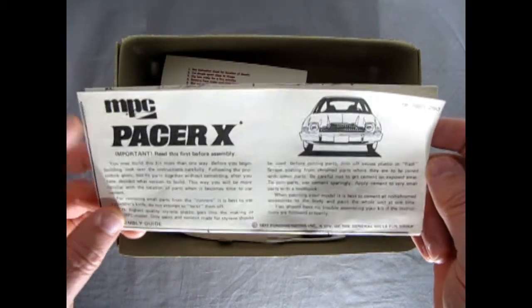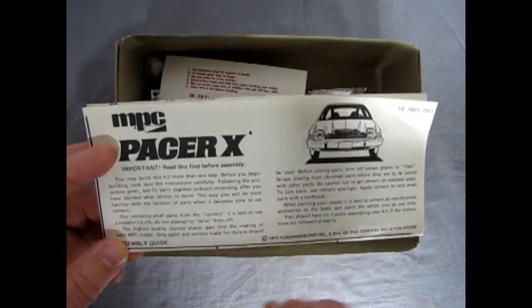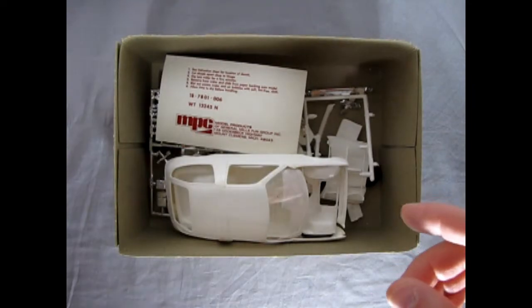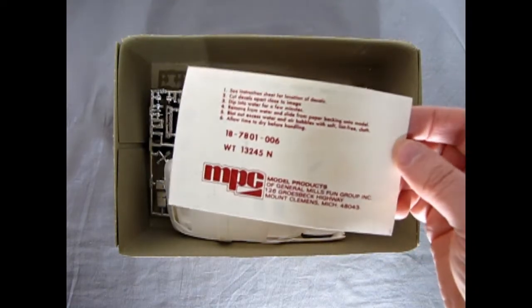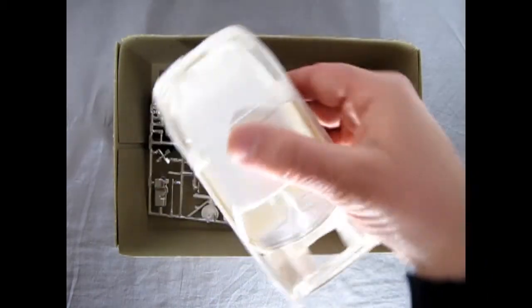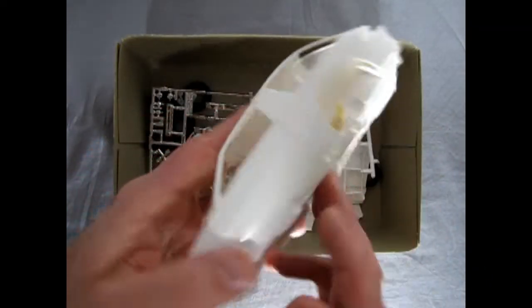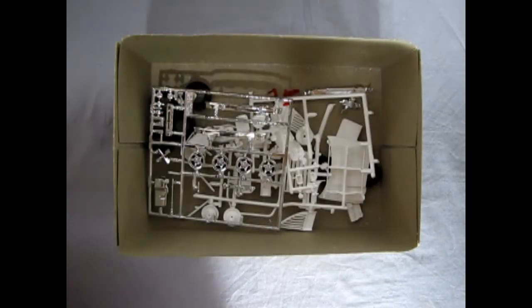So here we have our Pacer X instruction sheet which came out in 1977 for the 78 year which means this model kit is one of the annuals. There's our original MPC decals which we will take a look at at the end of this video and then here's our body interior glass and underpan all together. We can take a look at that in a minute.